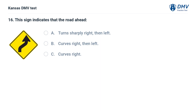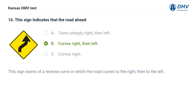This sign indicates that the road ahead: A. Turns sharply right, then left. B. Curves right, then left. This sign warns of a reverse curve in which the road curves to the right, then to the left.